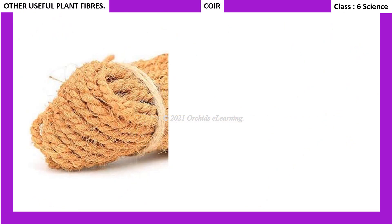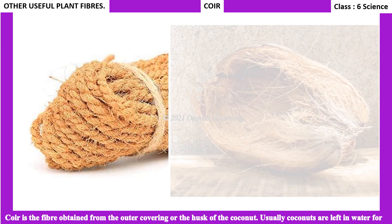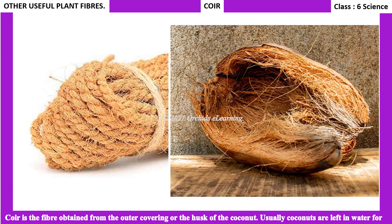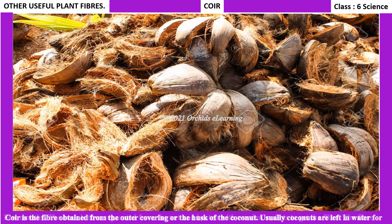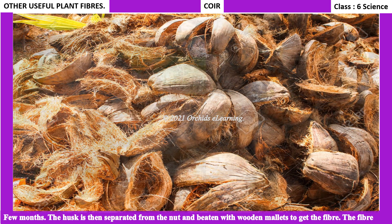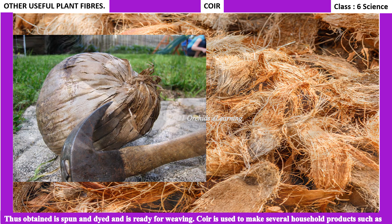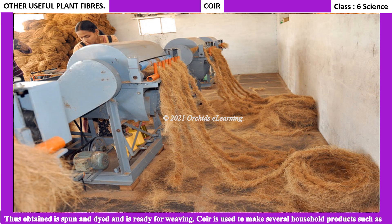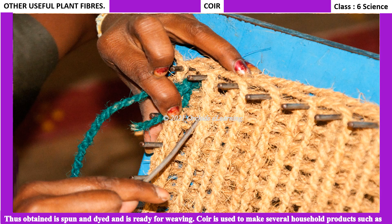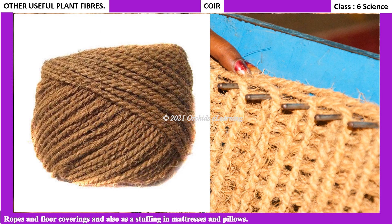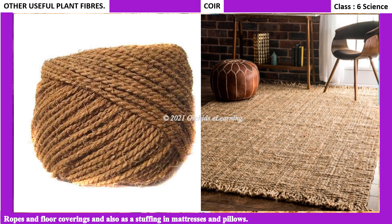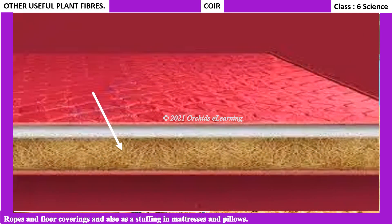Now let us learn about other useful plant fibers. Coir is the fiber obtained from the outer covering — the husk — of the coconut. Coconuts are left in water for a few months; the husk is then separated from the nut and beaten with wooden mallets to get the fiber. The fiber obtained is spun and dyed and is ready for weaving. Coir is used to make ropes, floor coverings, and is also used as stuffing in mattresses and pillows.